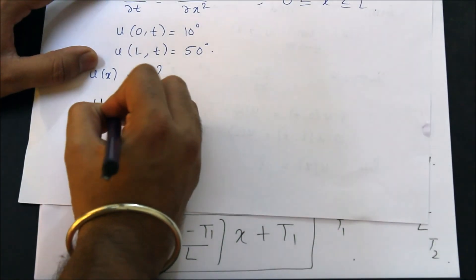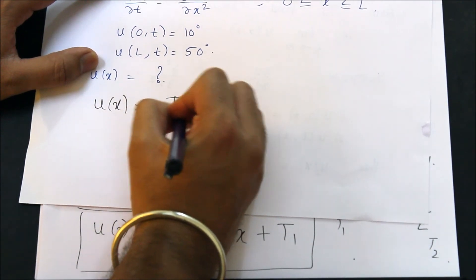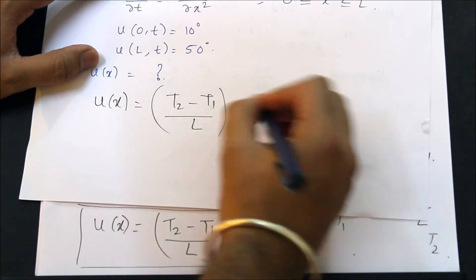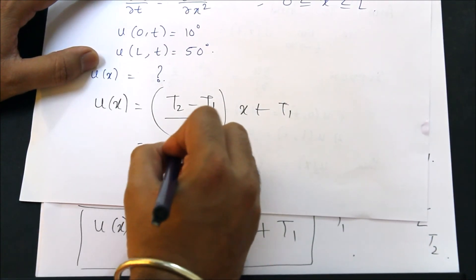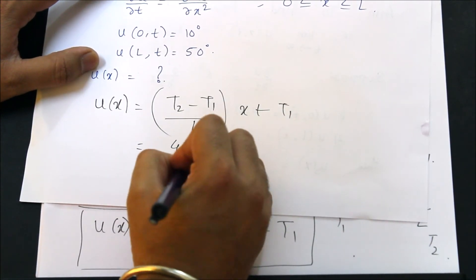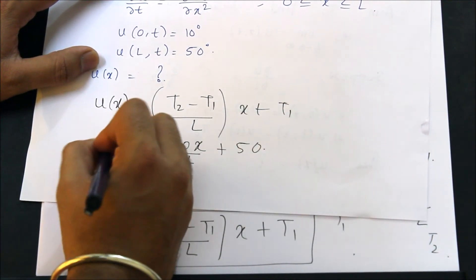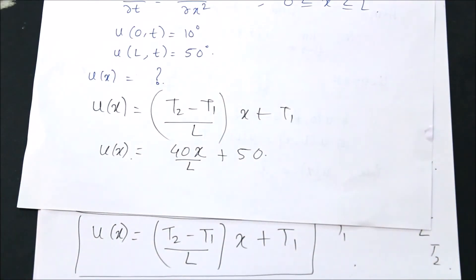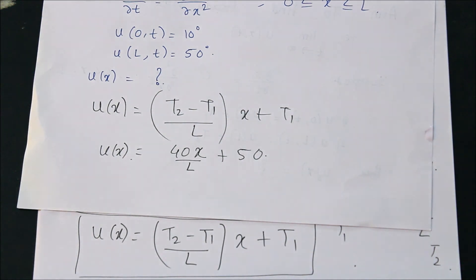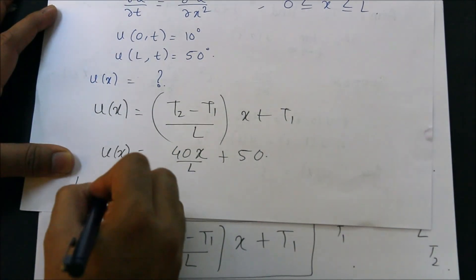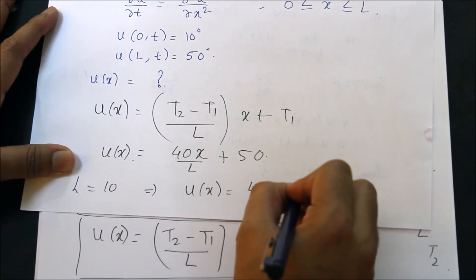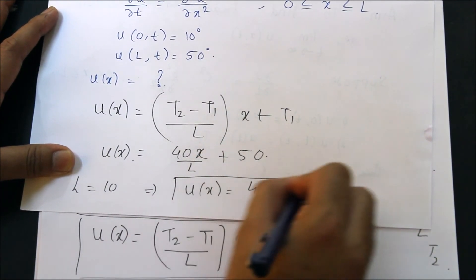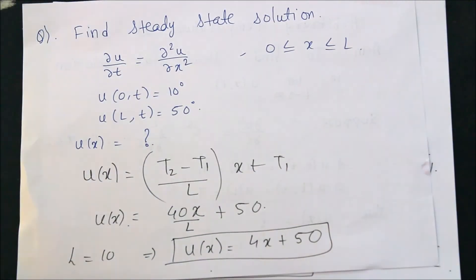If I use this formula, U of X is (T2 minus T1) upon L into X plus T1. If I put the values, T2 minus T1 is 40X upon L plus 50. This is my temperature. Suppose L is also given as 10 units. What is my U of X? It will be 4X plus 50.